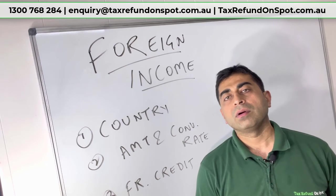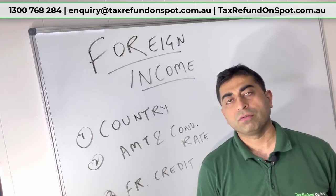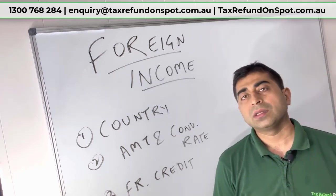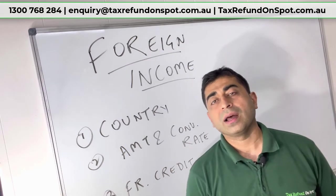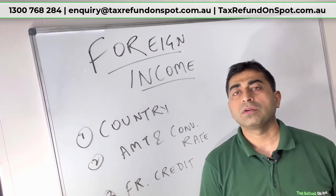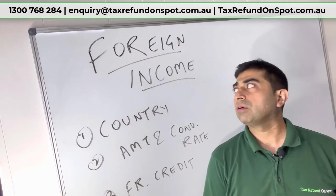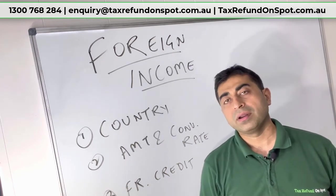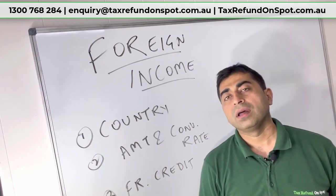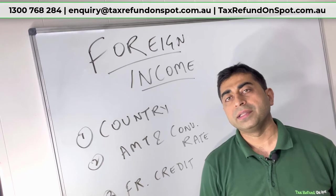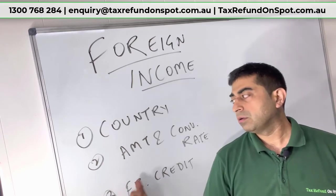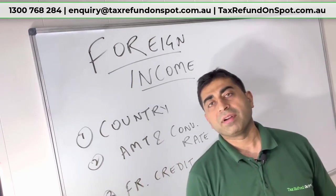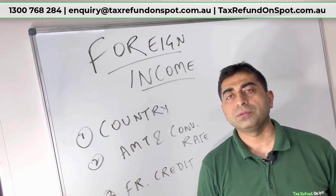The rules have been tightened and the tax office is very strict on foreign income. You must now include the country name from where you generated the income, the amount, the conversion rate, and any franking credits.